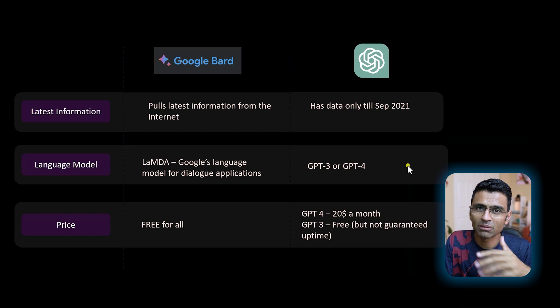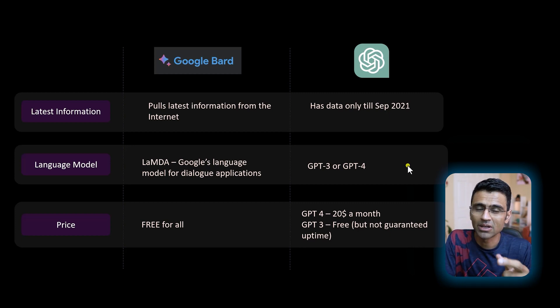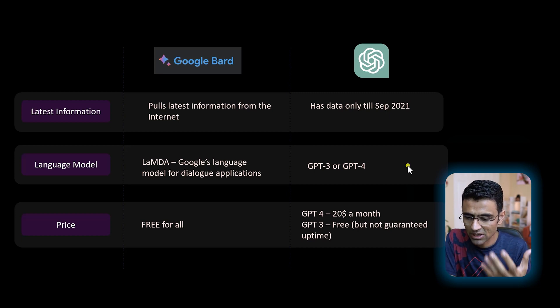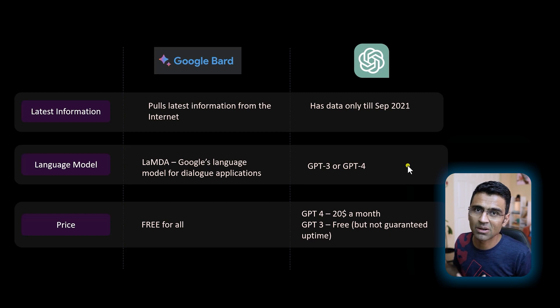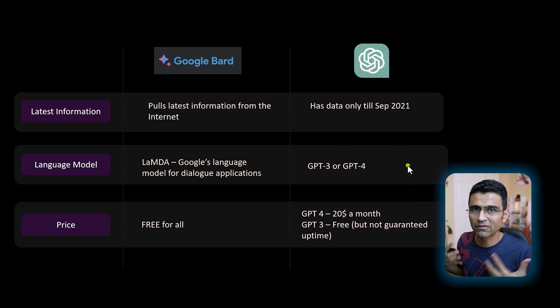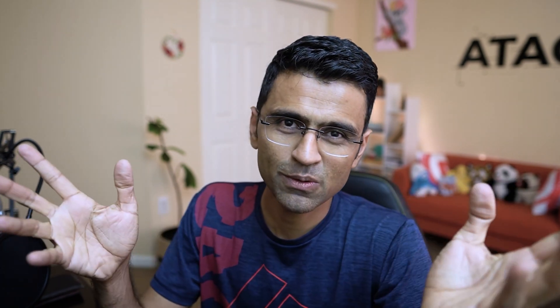Remember one thing: AI will not replace your jobs, but a person using AI will. So make sure you start using these tools to improve your productivity. Treat AI as your friend which can improve your productivity. We looked at all these use cases — writing email, writing code, LinkedIn post, etc. Start using AI tools to make yourself more and more productive. If you like this video, give it a thumbs up so that the YouTube algorithm becomes happy. If you have any questions, there is a comment box below.